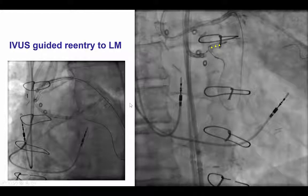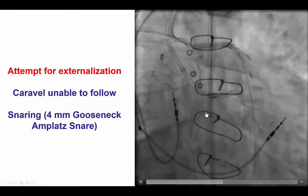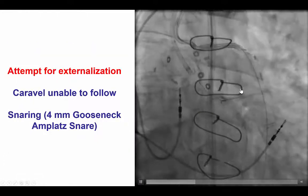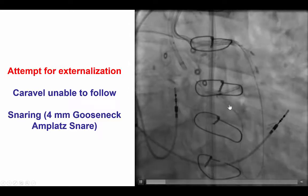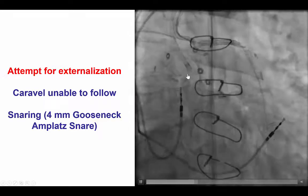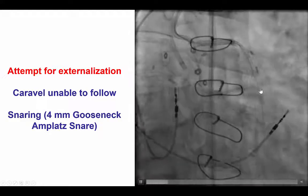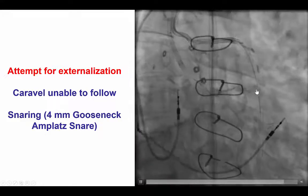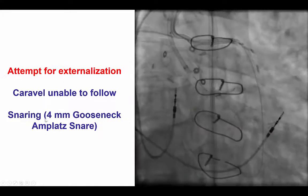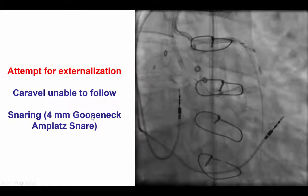We then tried to perform a stent reverse CART by advancing a retrograde guidewire into the LAD and the left main. We used intravascular ultrasound guidance to ensure that the wire was in the true lumen. The wire did cross into the true lumen, but unfortunately instead of going towards the left main and the aorta, the wire was going towards the mid and distal LAD. That is why we used a 4 mm gooseneck snare to snare the guidewire.